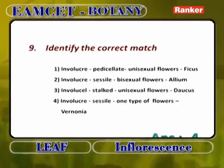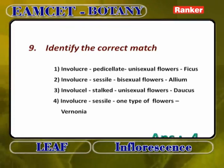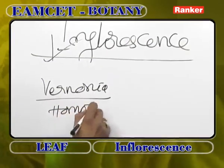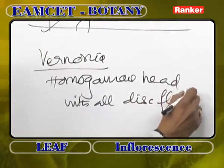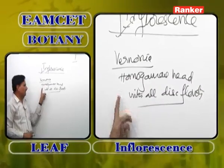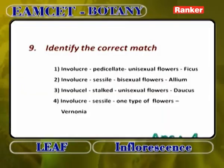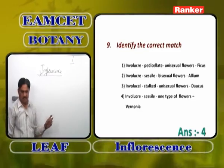Identify the correct match — involucre with pedicellate unisexual flowers: Ficus (hypanthodium); involucre with sessile bisexual flowers: Allium; involucre with stalked unisexual flowers in Dolichos is wrong — unisexual is incorrect. Involucre with sessile flowers of one type: Vernonia — a homogamous head with all disc florets. Head means involucre is present, flowers are sessile, only one type (disc florets). Answer: 4 — Vernonia.